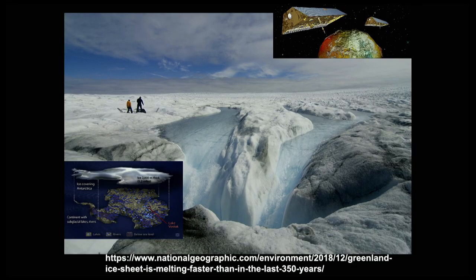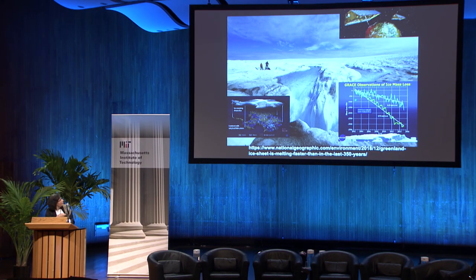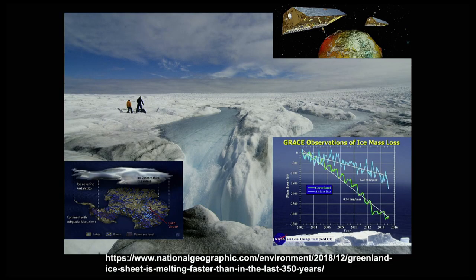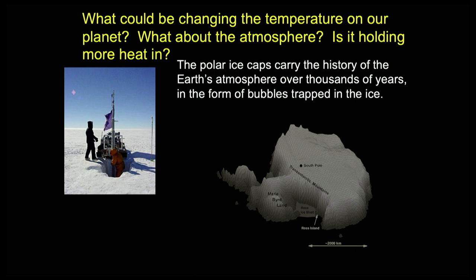We can launch satellites that measure gravity—quite similar to the ones Professor Zuber was the principal investigator for to investigate the moon's gravity field. These satellites can tell you how gravity has changed in the polar regions, which tells you the mass of the ice sheet. Both ice sheets are losing mass: Greenland and Antarctica have both lost a significant amount of mass in the last 20 years or so.